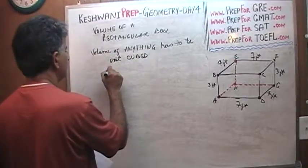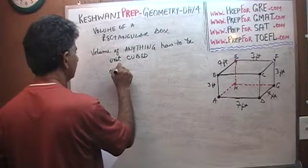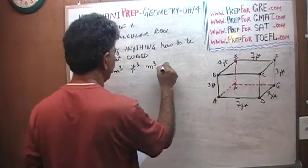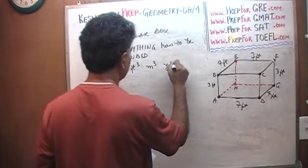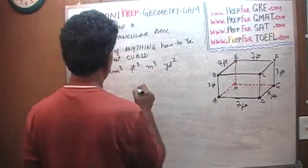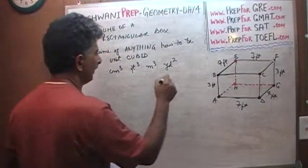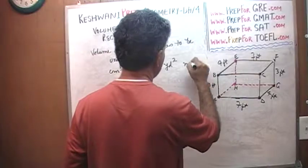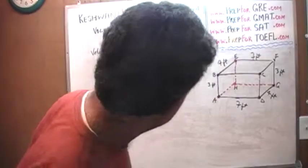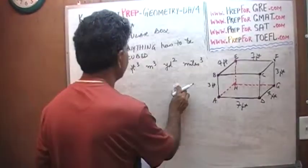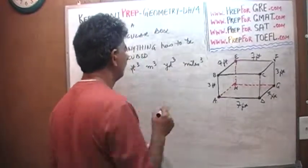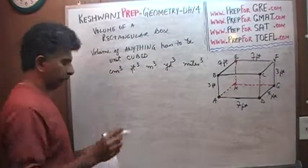It has to be centimeter cubed. It has to be feet cubed. It has to be meter cubed. It has to be yard cubed. It could be miles cubed. Whatever the unit is, the unit has to be cubed. The question is why?